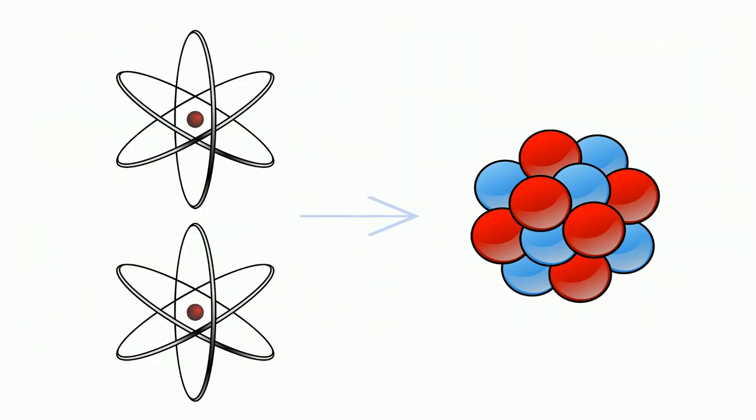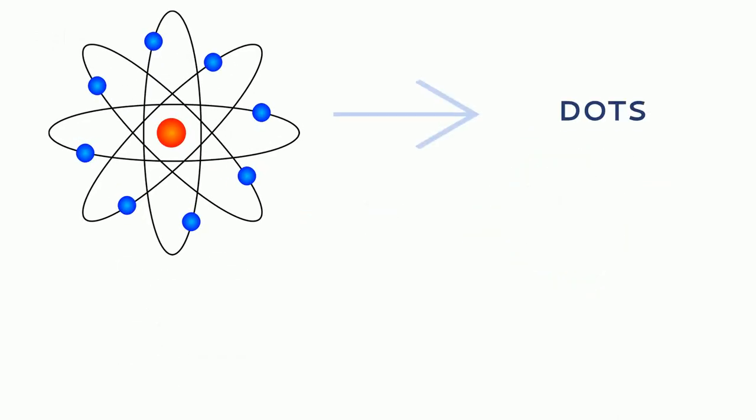For example, two hydrogen atoms form a molecule by sharing a pair of electrons. If electrons are indicated as dots, the formation of hydrogen molecules can be shown as demonstrated.